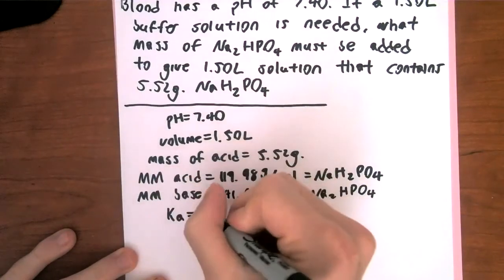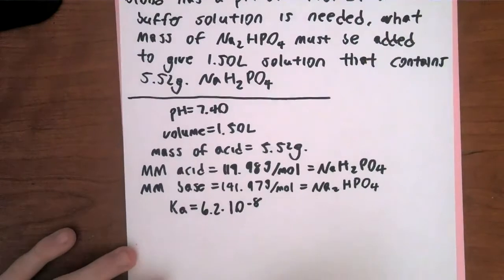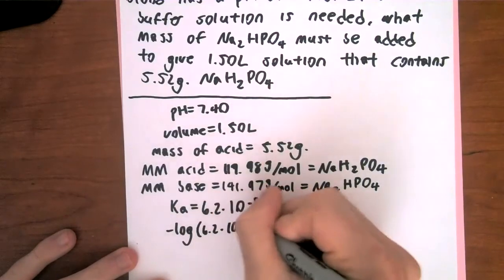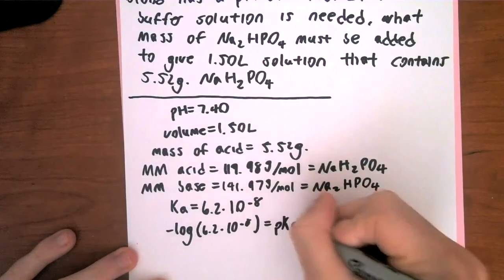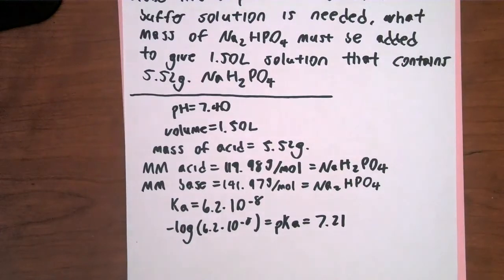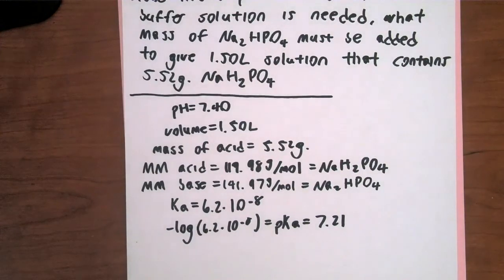On the exam or homework, the Ka of this acid would be given to you. It's 6.2 × 10⁻⁸. I'll find the pKa quickly: negative log of 6.2 × 10⁻⁸ equals pKa = 7.21. The reason I do this is that working with more in-depth buffers and titrations, you want the pKa. It will always help — especially when looking at equivalence points and half-equivalence points in the next problem.